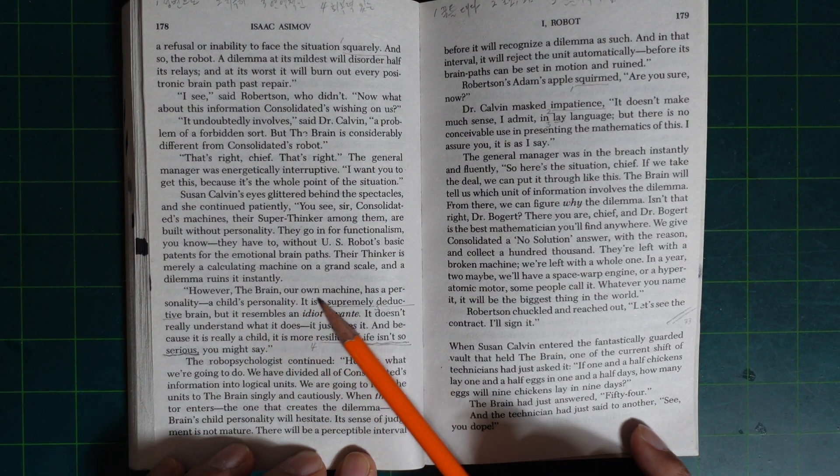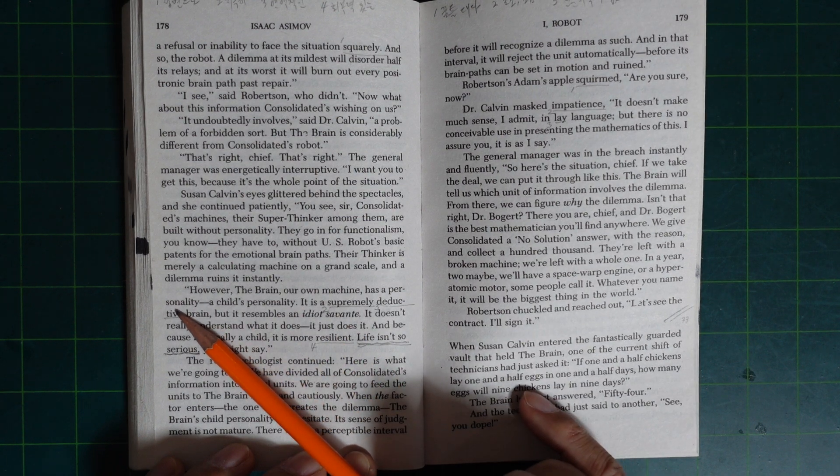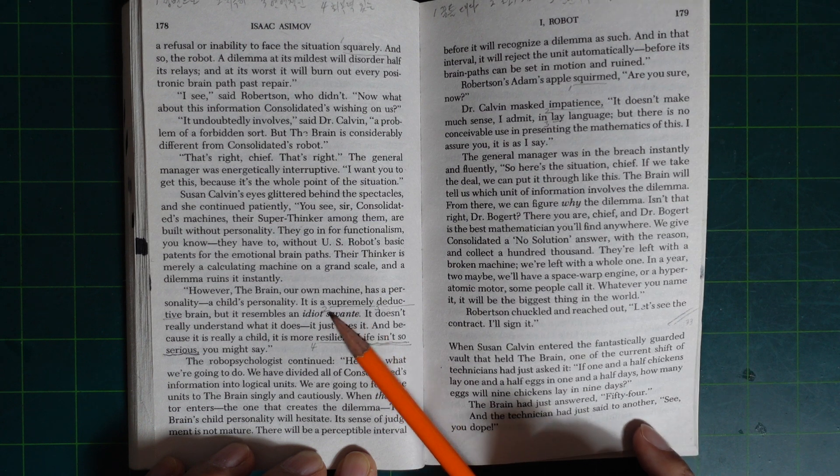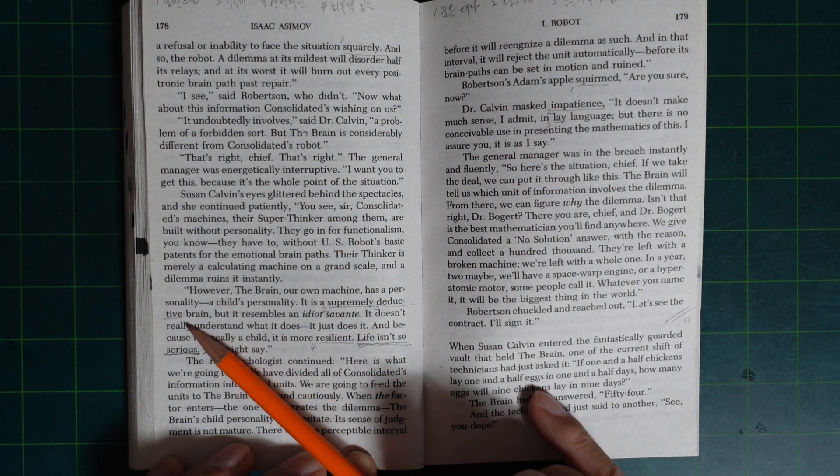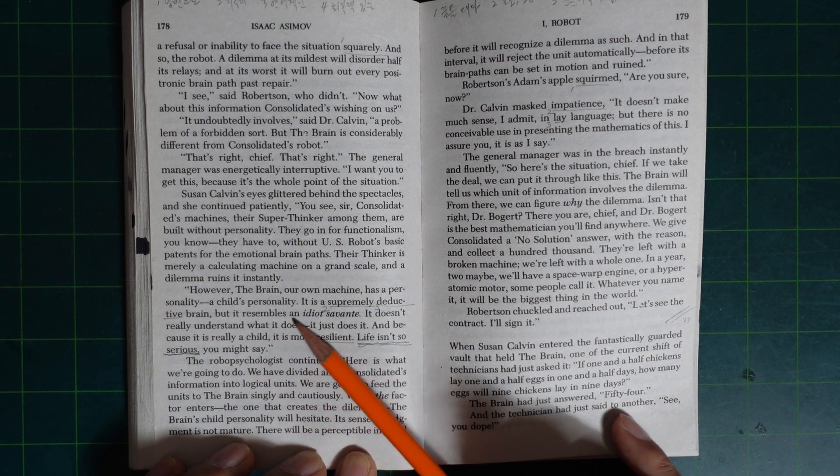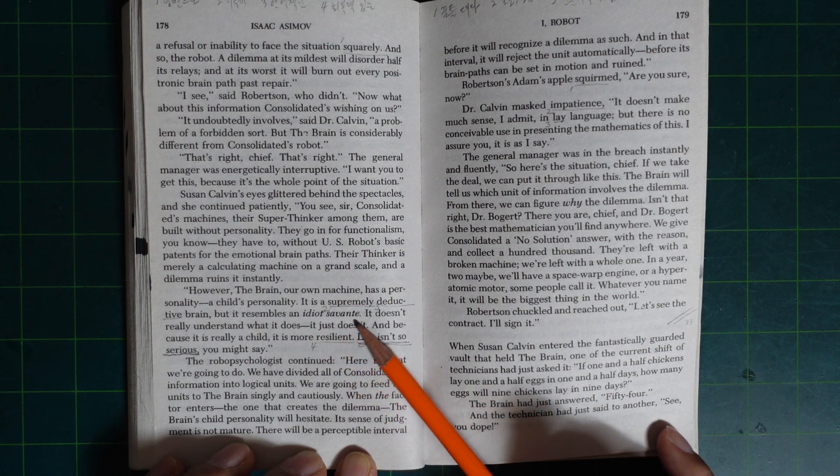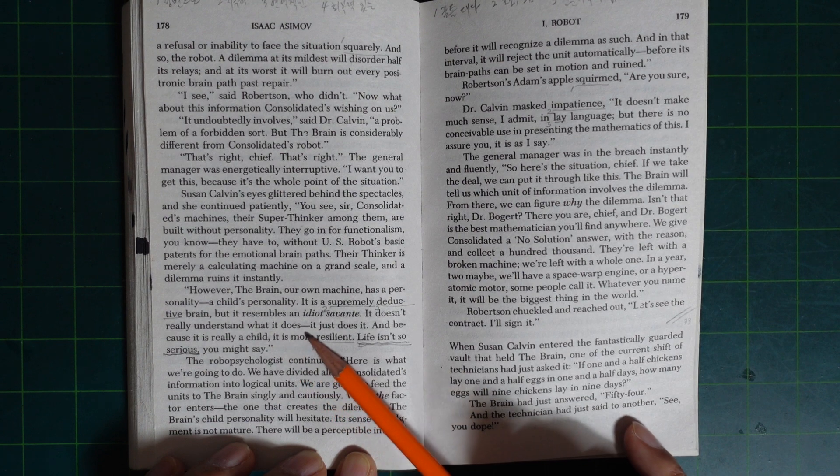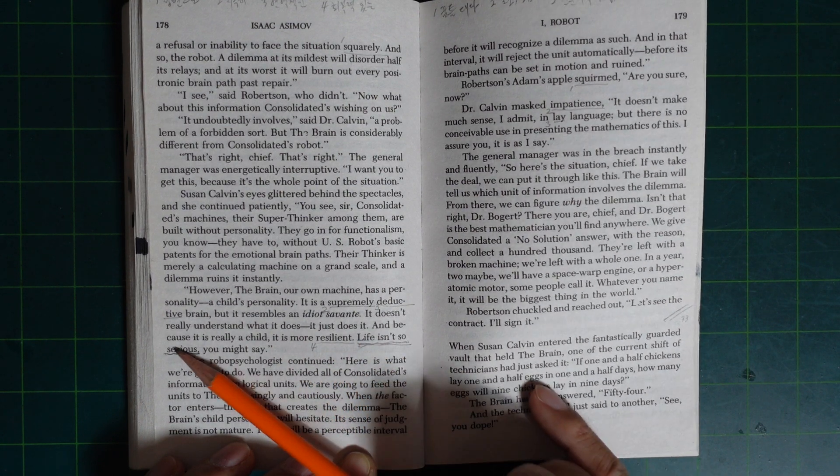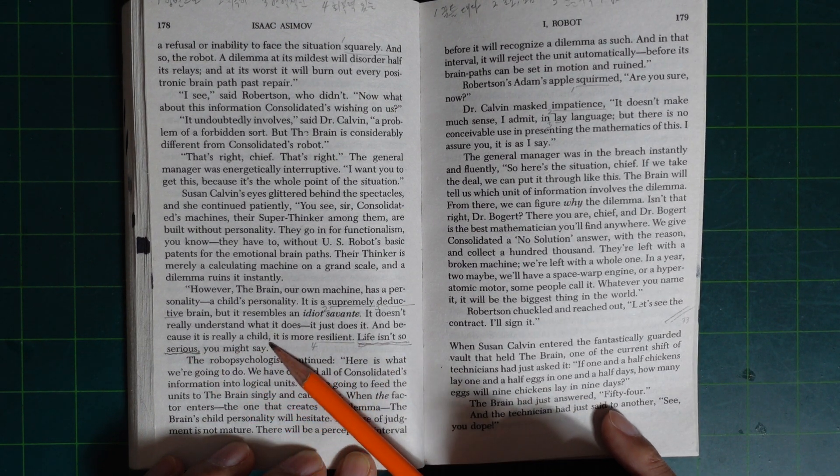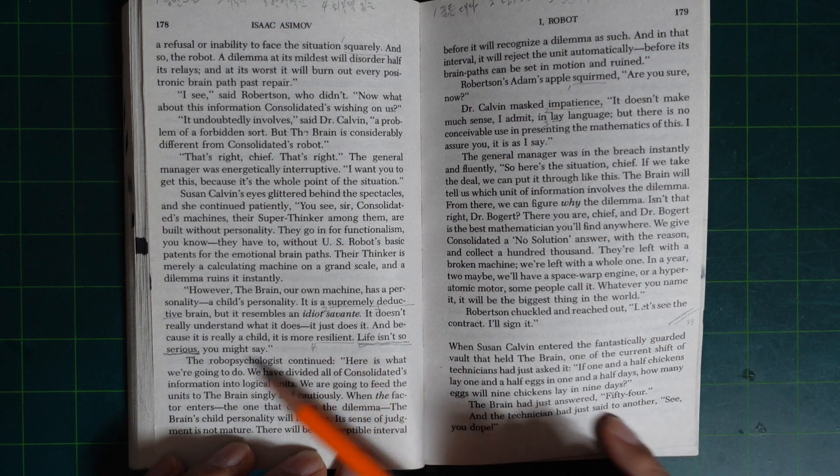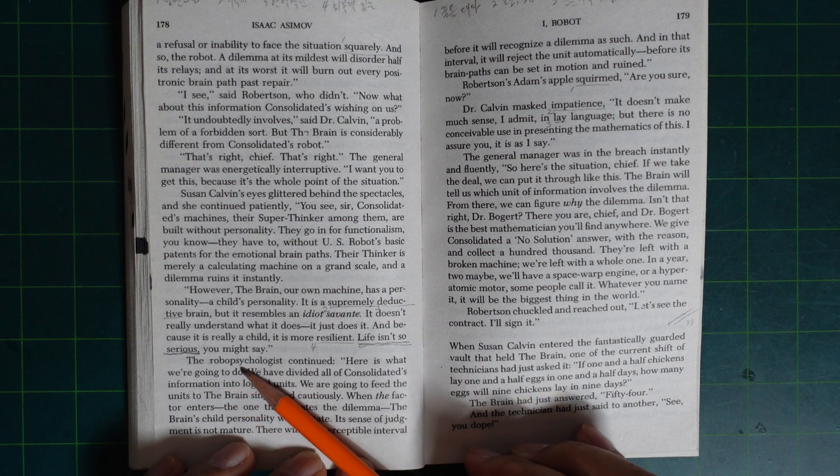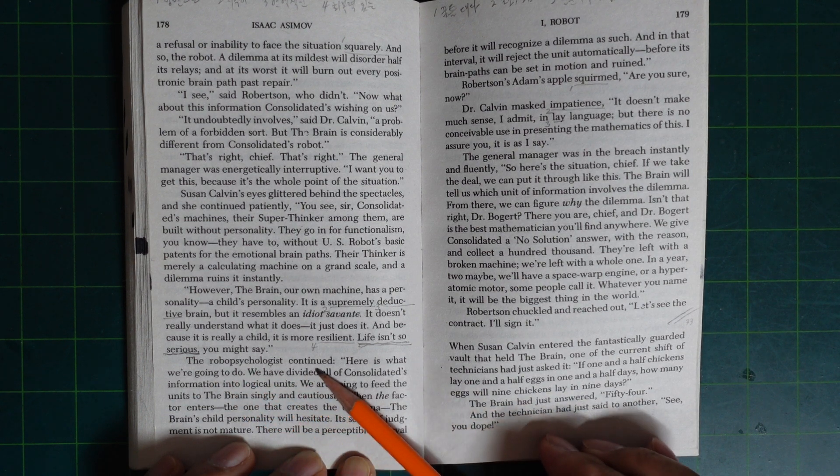However, the Brain, our own machine, has a personality—a child's personality. It is a supremely deductive brain, but it resembles an idiot savant. It doesn't really understand what it does, it just does. And because it's really a child, it's more resilient. Life isn't so serious, you might say.